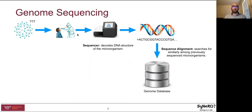Genome sequencing consists of obtaining a sample that contains the microorganism, then feeding it to a sequencer, which decodes the DNA structure of the microorganism and outputs a sequence file. The sequence file is then used to search for similarity against a genome database containing previously sequenced genomes. This process is called sequence alignment. The most similar genome to the newly discovered microorganism defines its functional properties. For example, COVID-19 was mostly similar to the SARS coronavirus that appeared more than 10 years ago.